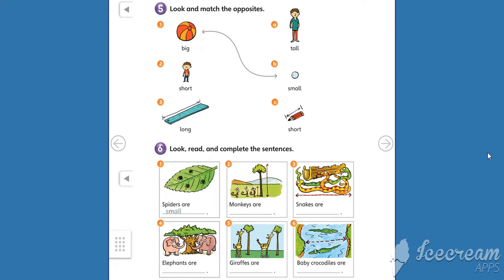Hello again! Let's answer World Book 76. Activity 5 says, look and match the opposites. These are adjectives, kids.